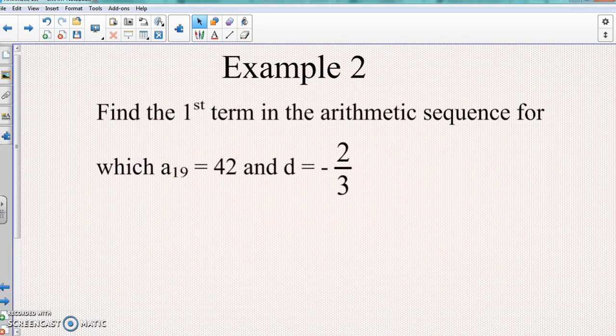All right, so this time we're going to find the first term in the arithmetic sequence for which a₁₉ equals 42 and d is negative 2/3.